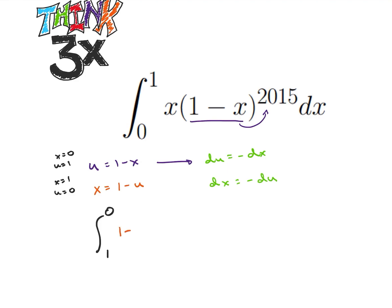So we're going to have this 1 minus u instead of x. And then we're going to have u raised to the 2015th power. And then instead of positive dx, we're going to have negative du.